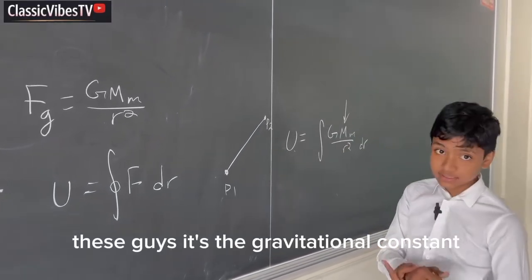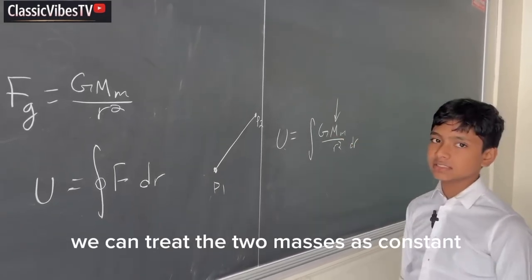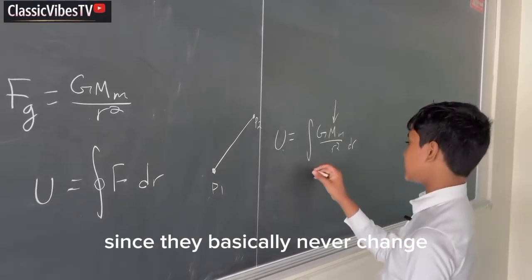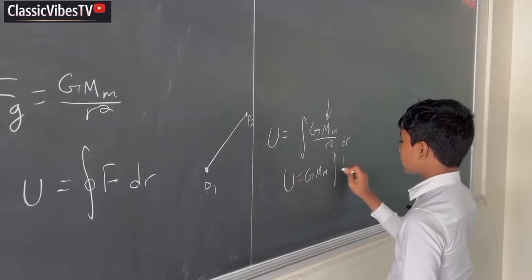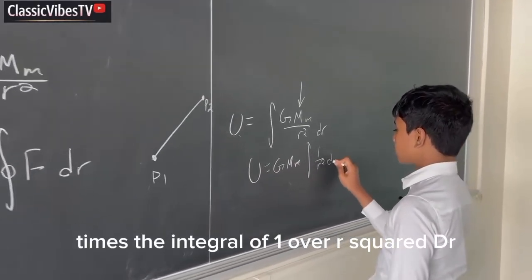These guys, it's the gravitational constant, it's literally in the name. We can treat the two masses as constant since they basically never change, which means we've just got the integral of 1 over r squared dr.